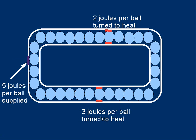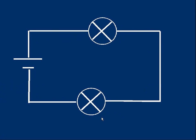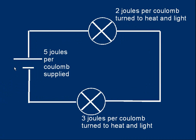Let's put some numbers in. Suppose the cell provides five joules for each coulomb of charge that passes through it — a bit like providing five joules for each ball we push by. The energy is turned to heat and light in the bulbs: two joules are turned to heat and light for each coulomb that passes through the top bulb, and three joules per coulomb in the bottom bulb. The numbers add up — these are the same numbers we used in the model, to help you relate the model to the actual circuit.